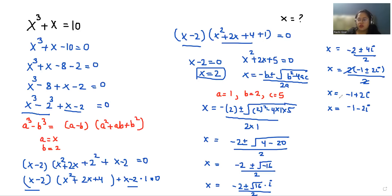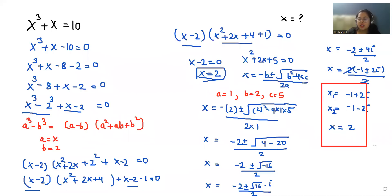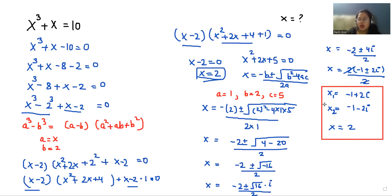So the first value is x equals negative 1 plus 2 iota, the second value is x equals negative 1 minus 2 iota, and the third value is x equals 2. These are the three values of x. I hope it's clear and you find it useful. Please give us a thumbs up and do subscribe to my channel.